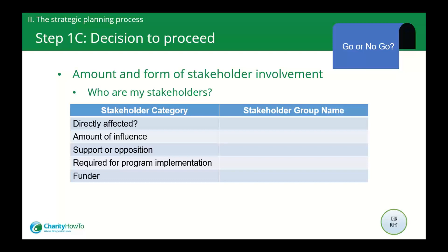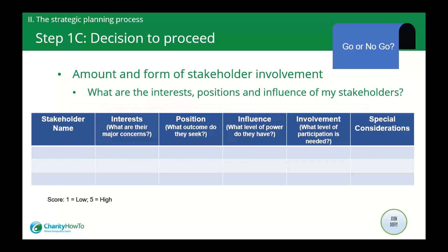Next, you determine the amount and form of stakeholder involvement. The organization's various stakeholders — its clients, its funders, and the agencies that support it — should be involved in the process because they have unique perspectives about the organization. You may identify stakeholder groups by asking what groups are directly affected by the organization, who might support or oppose the organization, and of course, include your funders as stakeholders.